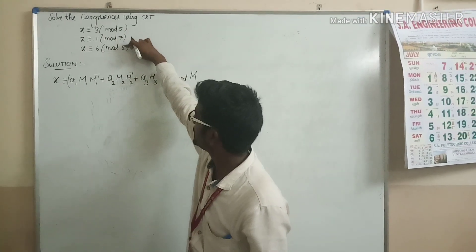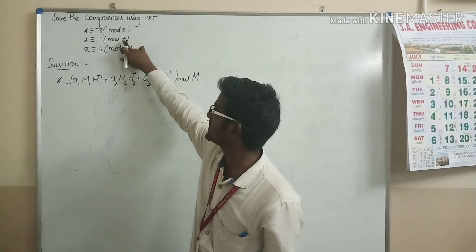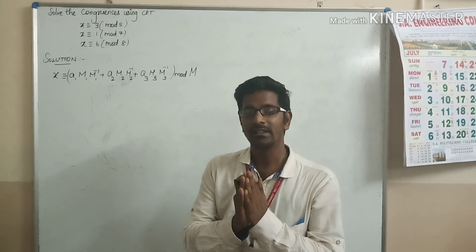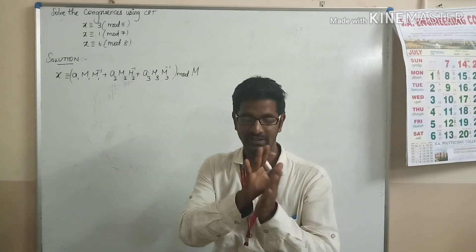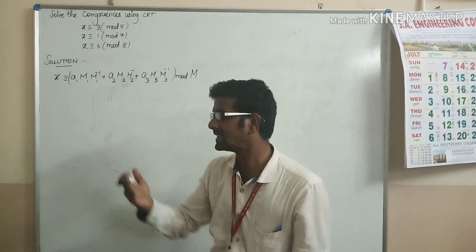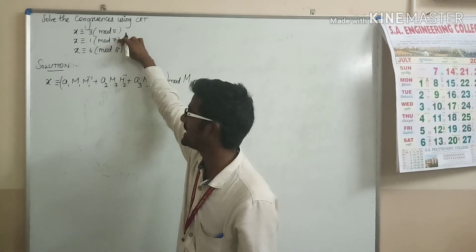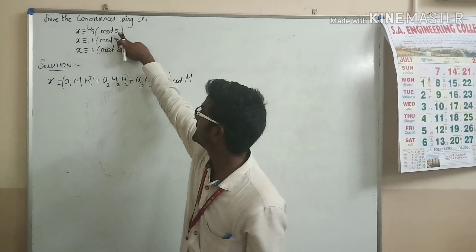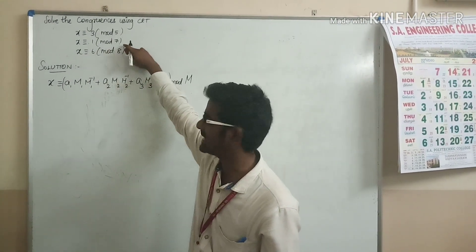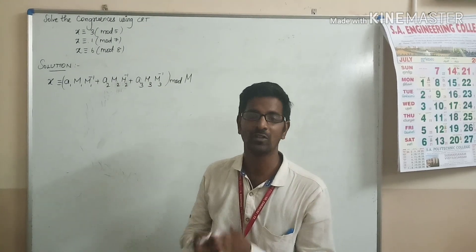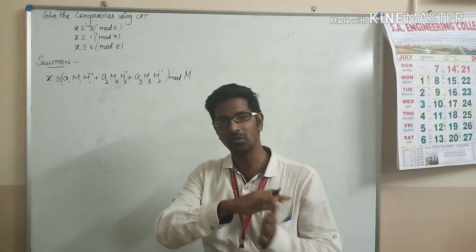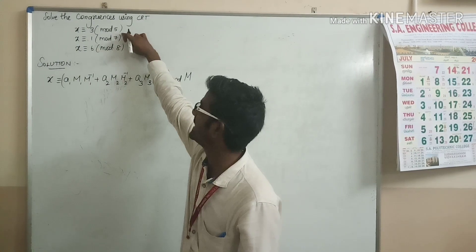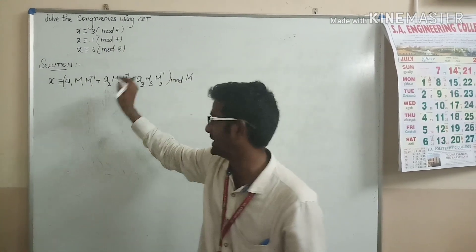Here m1 is 5, m2 is 7, and m3 is 8. The GCD of these three numbers should be 1. In other words, these three numbers are relatively prime. Yes, 5, 7, and 8 are relatively prime because there are no other numbers except 1 that can divide 5, 7, and 8 in common.